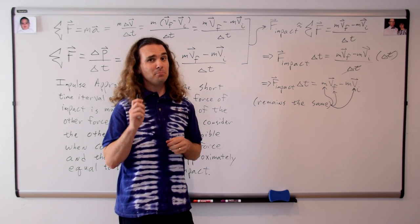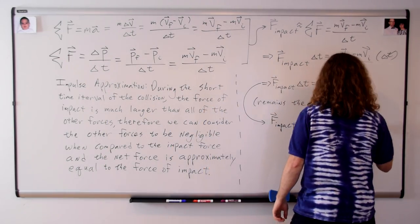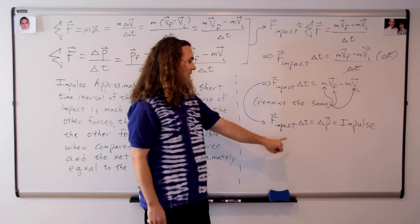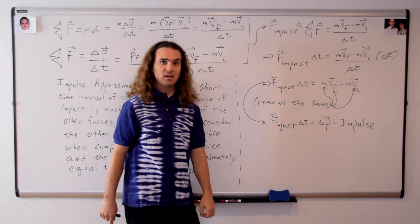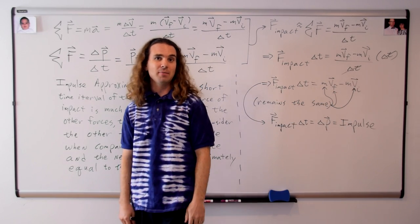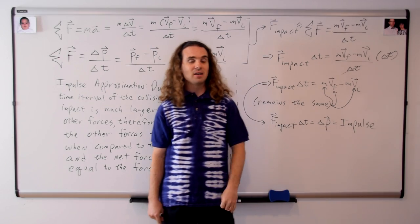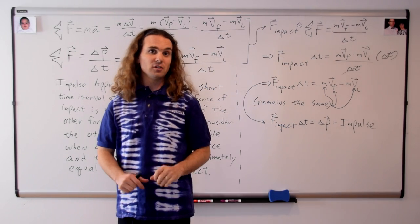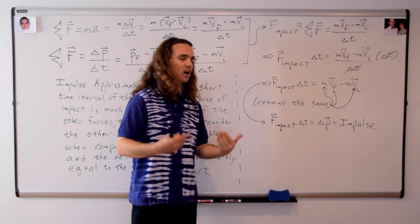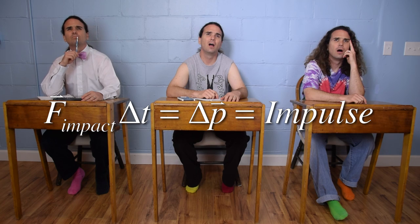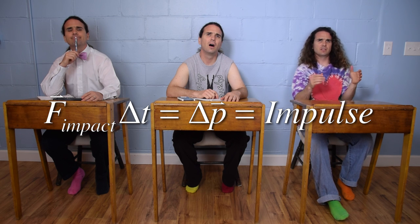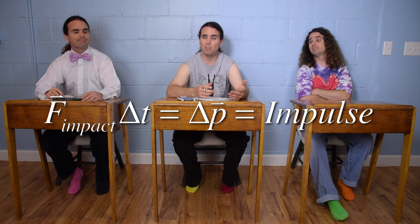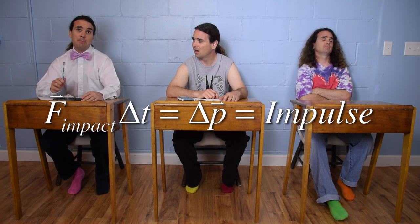So notice that the entire right-hand side of the equation does not change depending on whether I'm wearing my helmet or not. This is actually the concept of impulse. Impulse equals the change in momentum — mass times velocity final minus mass times velocity initial — and that is also equal to the force of impact times the change in time. None of these variables depend on whether I'm wearing my helmet, which means the product of the force of impact and the change in time will not change. So if the change in time is increased, the impact force is decreased, because their product remains constant.